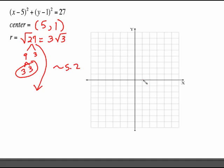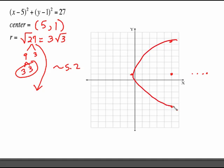So go over 5, up 1 for the center, then count a smidge more than 5 in each direction — about 5.2 — and connect the dots. That's supposed to be a circle.